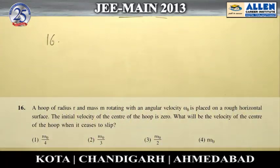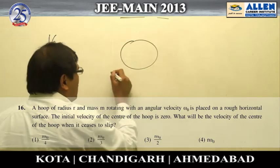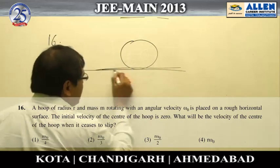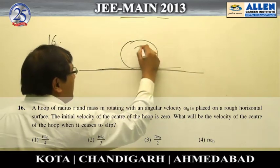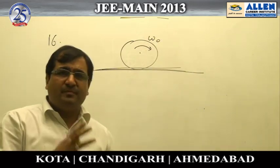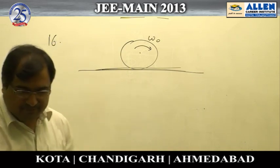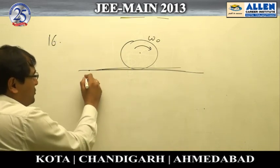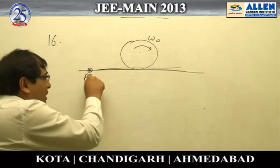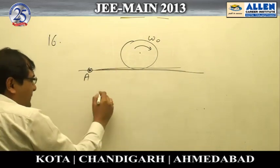Question number 16: a hoop is kept on a rough horizontal surface, given some initial angular velocity ω₀, and we are asked to find the velocity of the hoop when it starts pure rolling. An interesting approach is to take a point on the ground and write the angular momentum of the hoop about that point.